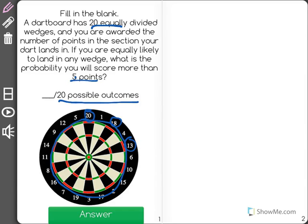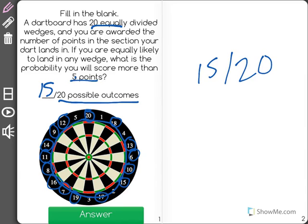And we could do a simple math problem, or we could just go around and circle all of the wedges that are greater than 5, and find out that 15 out of 20 possible outcomes will mean that we landed in a wedge that will give us more than 5 points for the correct answer.